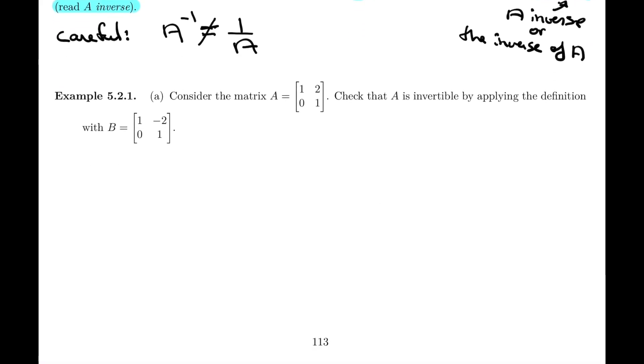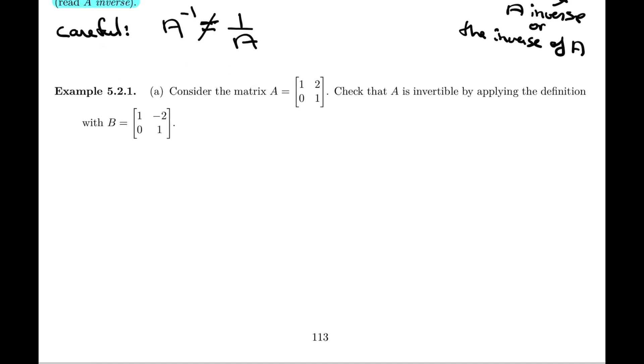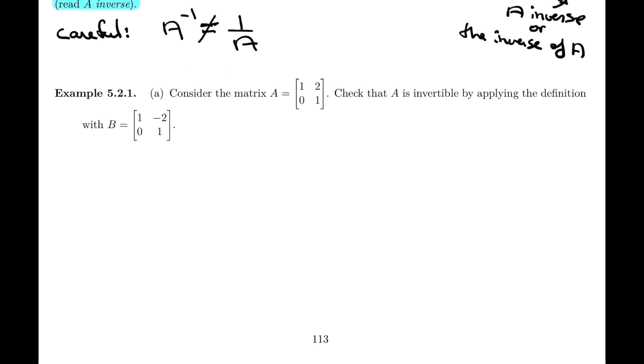So let's just see right away an example of an inverse matrix. Notice here we're given matrix A, 1, 2, 0, 1. And we're asked to check that A is invertible by applying the definition. What does that mean? Well, simply that we have to show that AB will equal I.